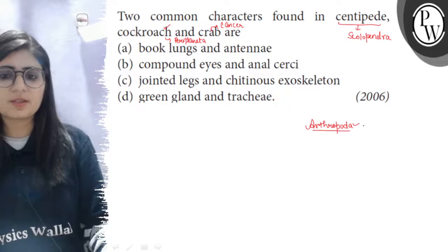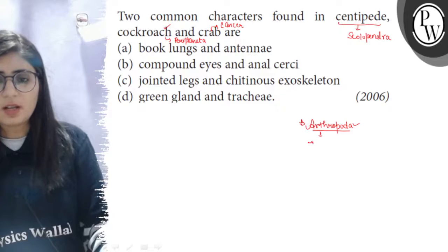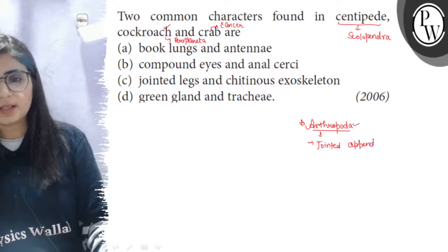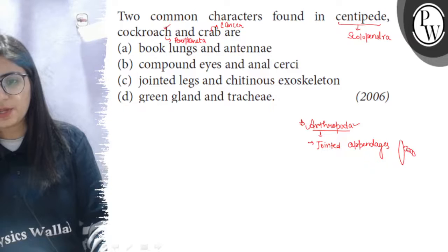It means they all have jointed appendages. When we say they have jointed appendages, it means the structures coming out from the body like the legs have joints, and also the antennae if present, they have joints.